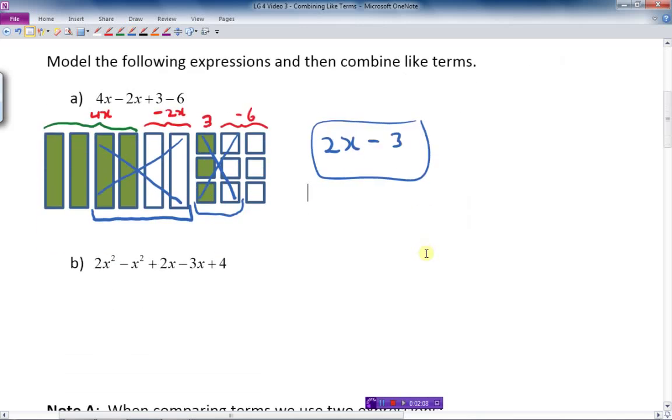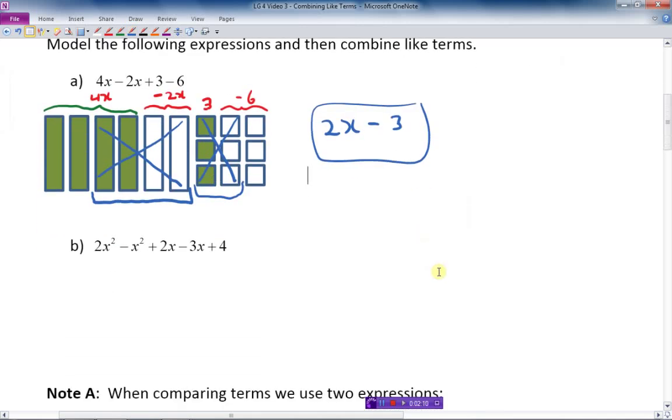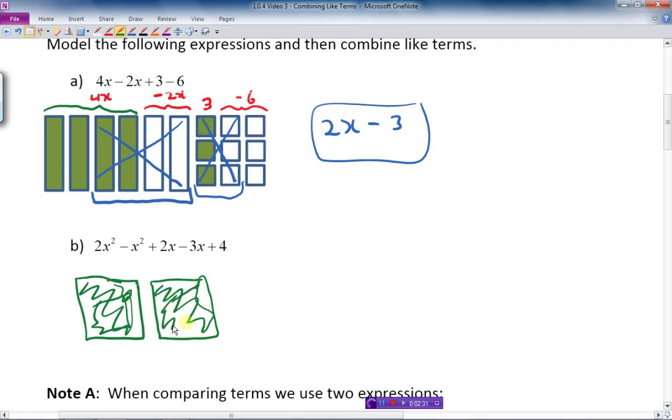Let's look at the next one and see how this thing can work again. So let me just make a rough sketch of this stuff. So 2x squared, so it's going to be like a square. There's one of them, and there's another one. So there's 2x squareds. That's the first thing, 2x squared.